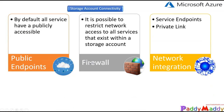There are three possible ways you can connect. The first one is public endpoints. When you create files within the storage account and configure public endpoints, you are making your entire storage account — files, VHDs, containers — publicly available, so that anybody with internet access can reach them.